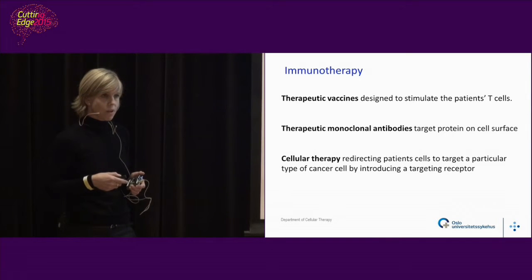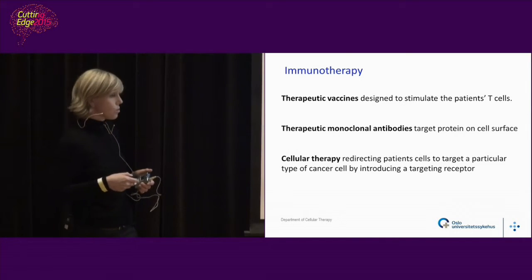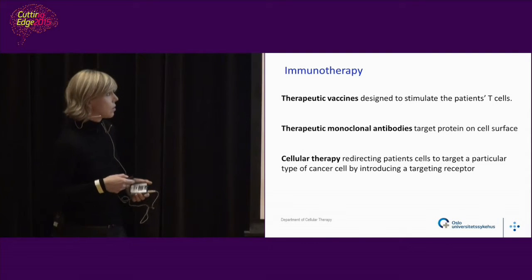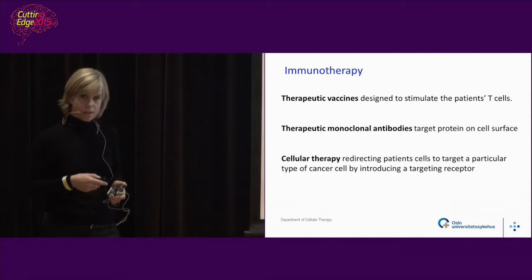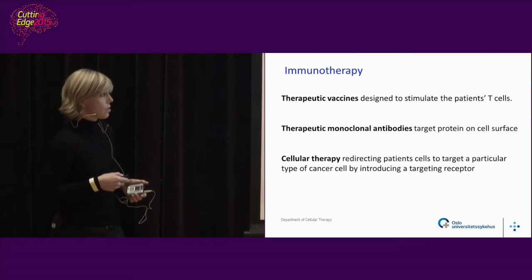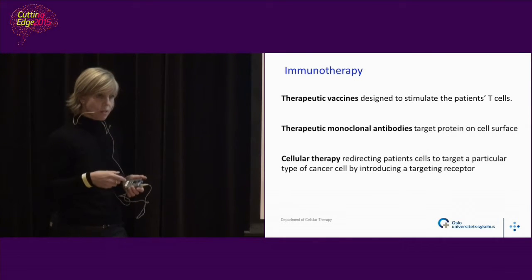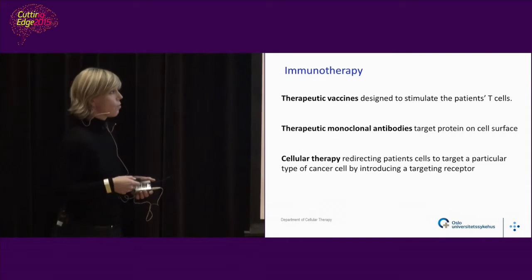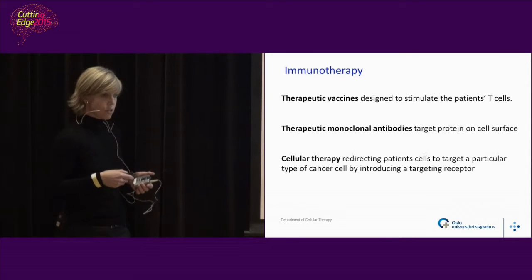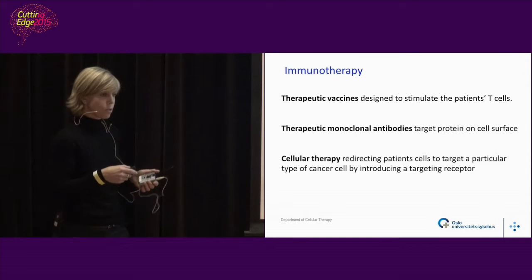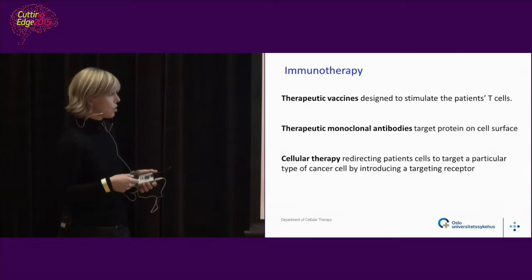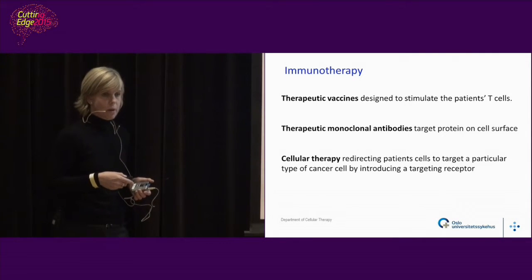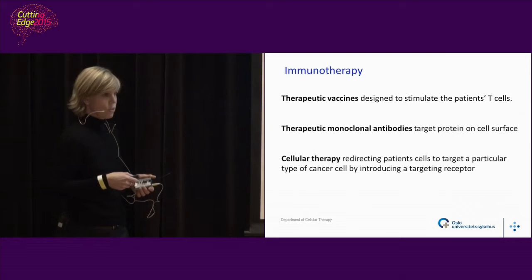These vaccines are designed to stimulate white blood cells or T cells in the patient. There are also many new monoclonal antibodies that can target proteins on the cell surface of tumor cells. Or we have cellular therapy, where we take the patient's own cells, genetically modify them by inserting a new molecule, give them back to the patient, and the cells will be ready to target the cancer cells.